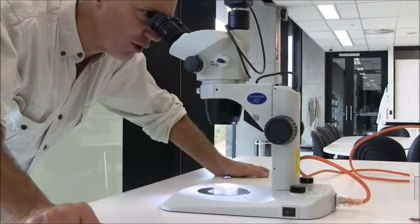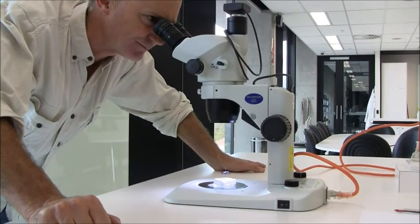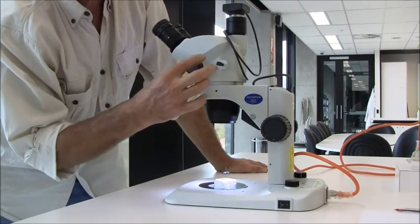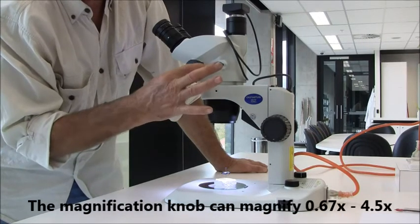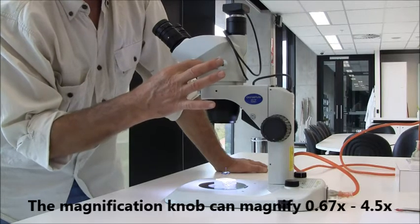Looking down this microscope, that little beetle is magnified 6.7 times. But you can adjust the magnification, and it's a continuum. Whatever is needed, but it goes from 0.67, through 0.8, through 1, 1.2.